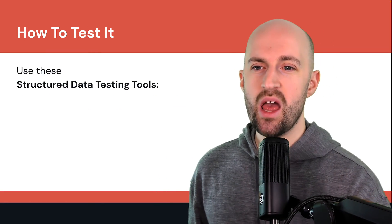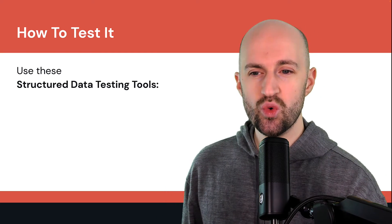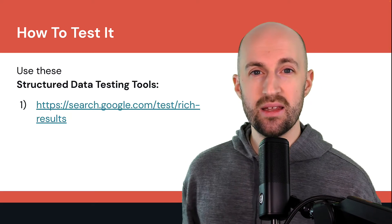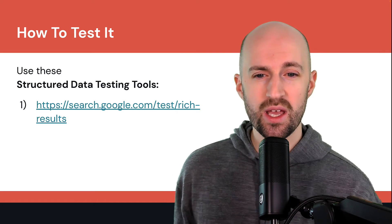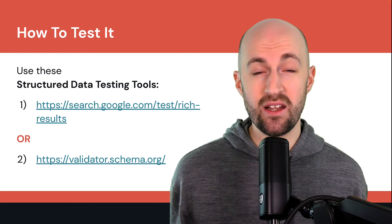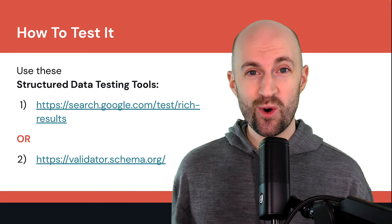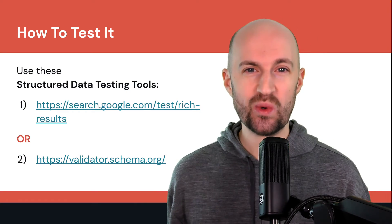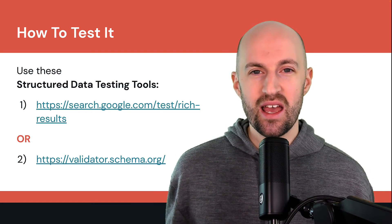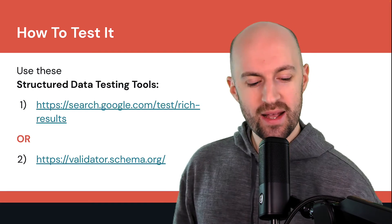Finally, how do you test it to make sure it works? You can use two tools. First is the Search Console rich results test — that basically allows you to test the page to see if it's working and pulling in correctly. Or you can use the schema.org validator. Yes, schema.org has a tool to test its own schema, so you can go there and use that to make sure you've implemented their schema correctly.